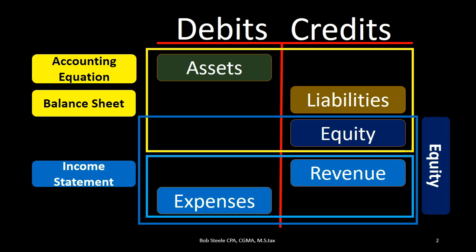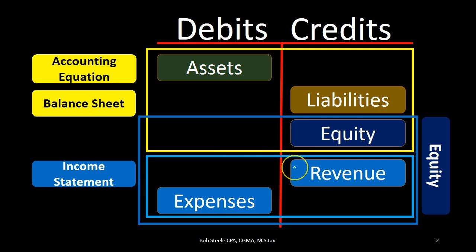The cheat sheet tells us that all asset accounts have debit balances — there are some exceptions, but typically all asset accounts have normal debit balances, and all liability accounts have normal credit balances. Equity accounts have normal credit balances, meaning total equity, the capital account, retained earnings, and the income statement accounts — revenue and expense. Revenue has a normal credit balance; expenses have normal debit balances.